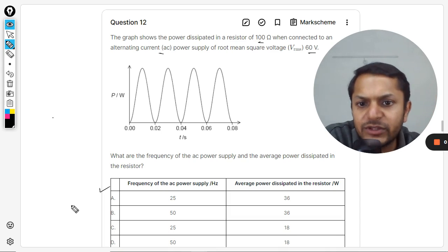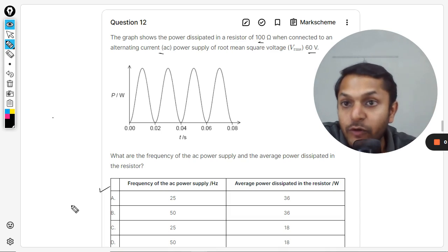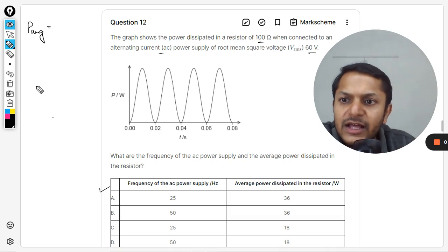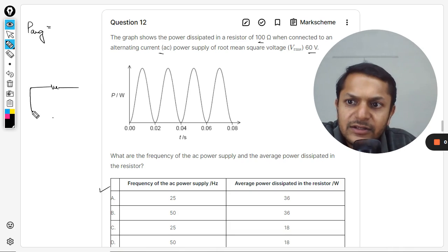So you want to comment upon the frequency of the AC power supply and the average power. Clearly, first of all for the average power, we have a formula. This is just a simple circuit that they are referring to.